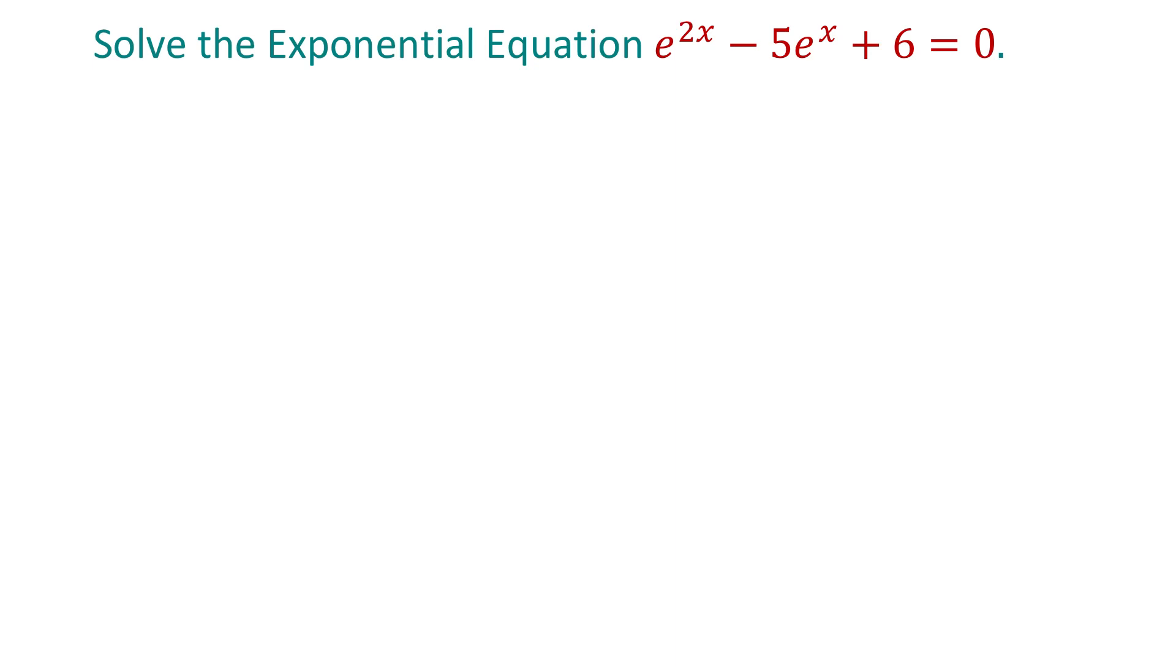I will rewrite this equation as e to the x power all to the second power minus 5 e to the x power plus 6 equals 0.